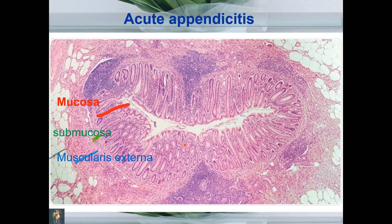Here you can see a beautiful image of appendicular tissue showing mucosa, sub-mucosa, and muscularis externa. You can see bunches of neutrophils infiltrating the mucosa and then into the deeper layers.